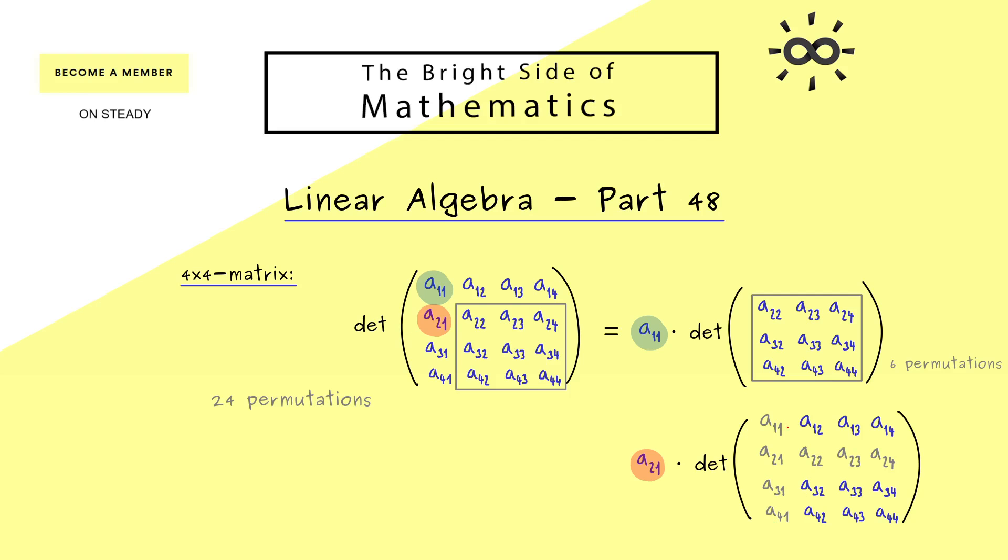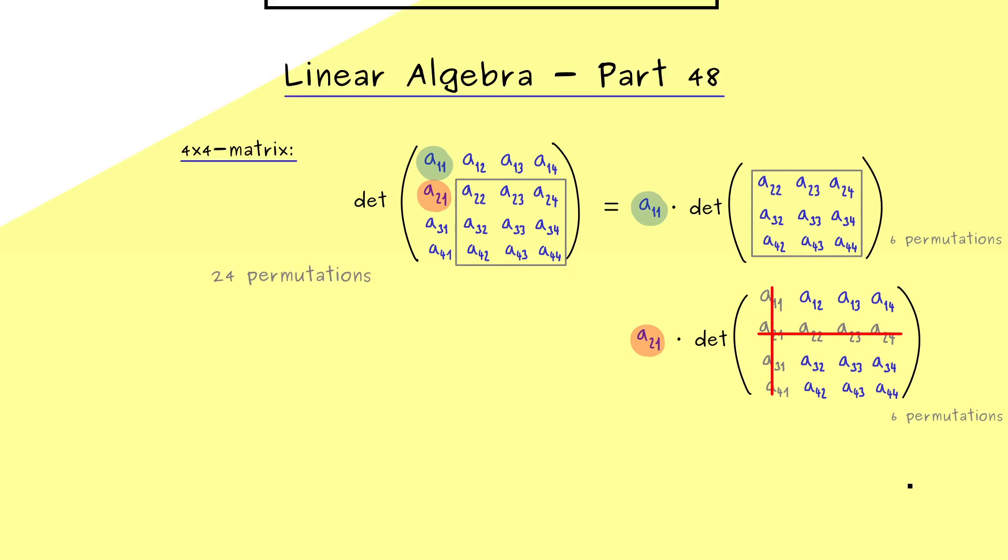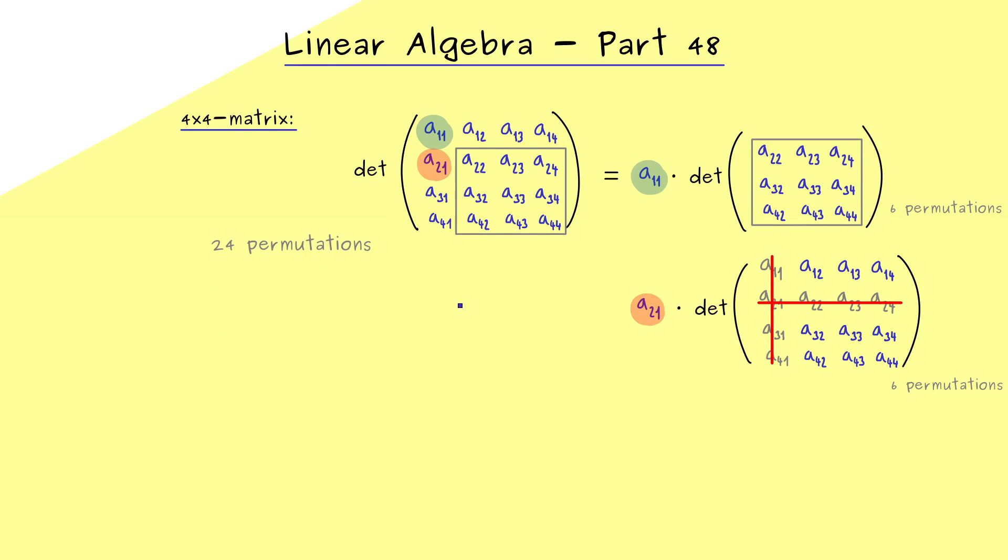Hence, we could denote the whole thing here by simply crossing the corresponding column and the corresponding row. Therefore, now we just want to calculate the determinant of the remaining 3x3 matrix here. And then as before, we get again 6 permutations here. And now you should see, we can simply continue here until we have covered the whole column.